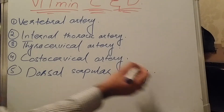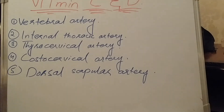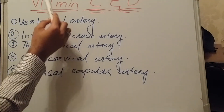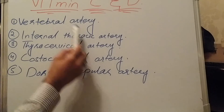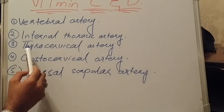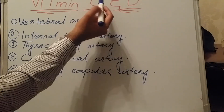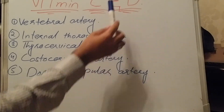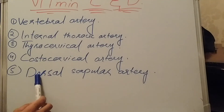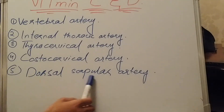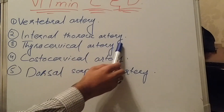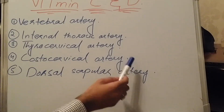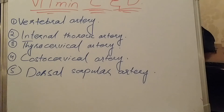Using this mnemonic you can easily remember all the branches: V for vertebral artery, I for internal thoracic artery, T for thyrocervical trunk, C for costocervical artery, and D for dorsal scapular artery. The thyrocervical trunk gives rise to four branches and the costocervical artery gives rise to two branches.